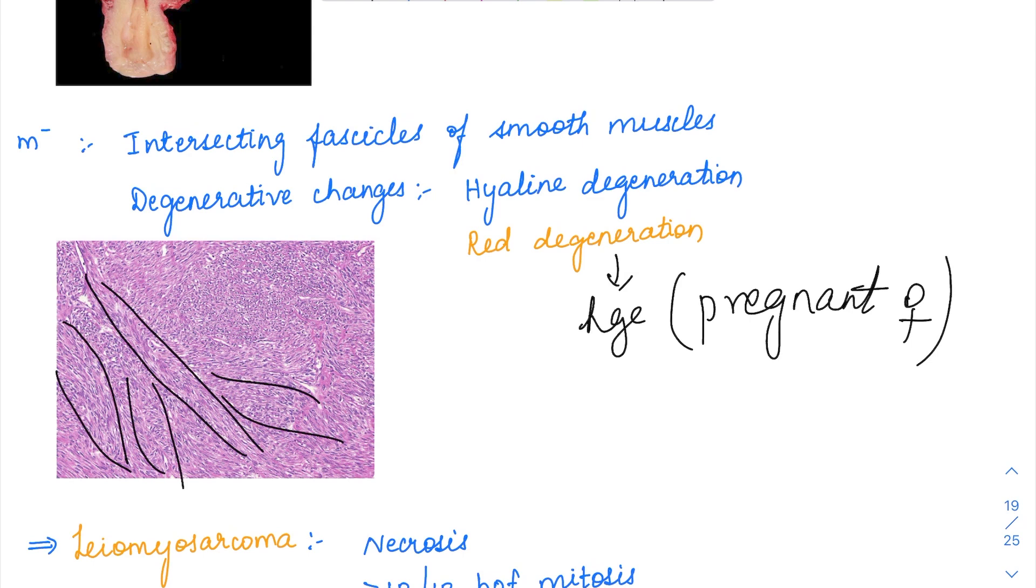In pregnant females, because of this hemorrhage, the leiomyomas appear to have rapid growth. This raises suspicion that it may have turned into a leiomyosarcoma or sarcoma.